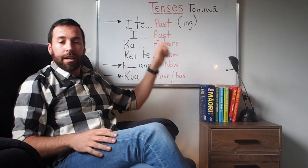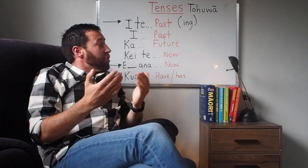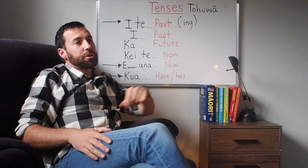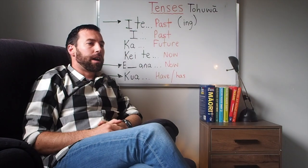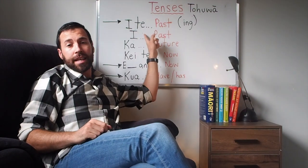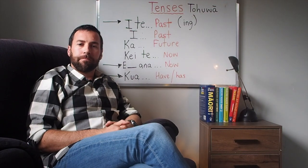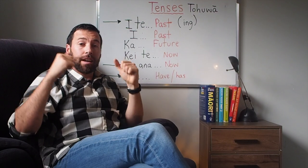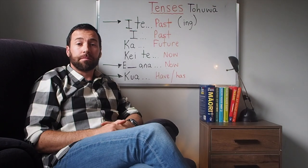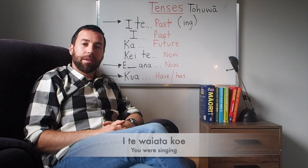We'll also cover i te. Generally speaking, when you strike an '-ing' in a sentence in English in the past tense — for example, crawling, running, crying — you'll use the i te tense marker. 'You were eating': i te, kai, koe. And if you were singing: i te, waiata, koe. Kapai.